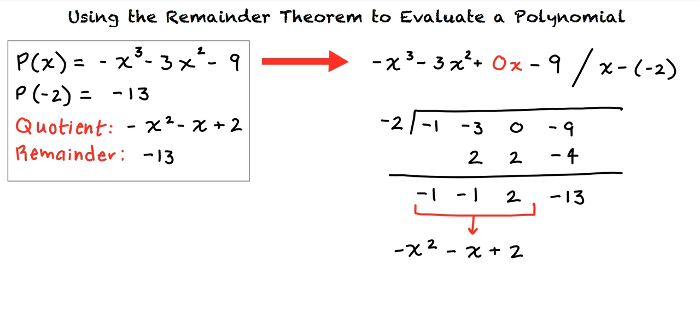Okay, I think I understand how to solve these types of problems. First, we identify what the divisor of our problem will be using the information provided. In this problem, it was x minus negative 2. Then, using synthetic division, we divided our dividend, p of x, by the divisor, x minus negative 2, to find our quotient, negative x squared minus x plus 2, and the remainder of the problem, negative 13. Excellent work!